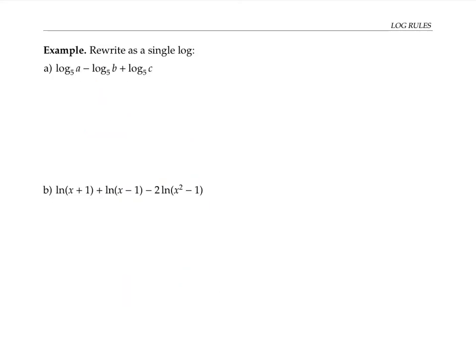In these next examples, we're going to go the other direction. We're given sums and differences of logs, and we want to combine them into a single log expression. If I look at the first two pieces, that's a difference of logs, so I can rewrite it as the log of a quotient. Now I have the sum of two logs, so I can rewrite that as the log of a product. I'll clean that up and rewrite it as log base five of a times c over b.